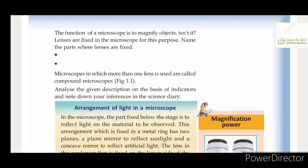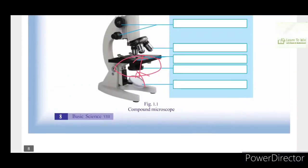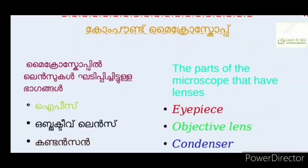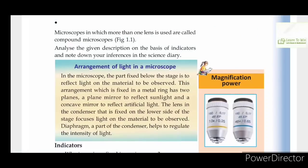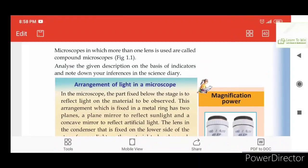Lenses are fixed in the microscope for the purpose of magnification. The lenses are fixed in the eye piece and in the objective lens. The condenser is in the mirror section. The microscope in which more than one lens is used is called a compound microscope.